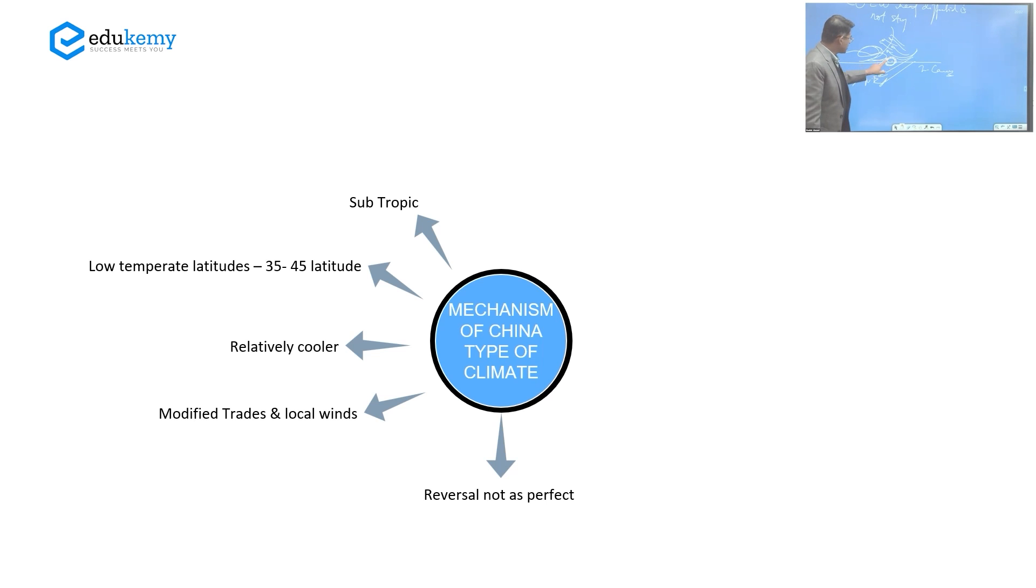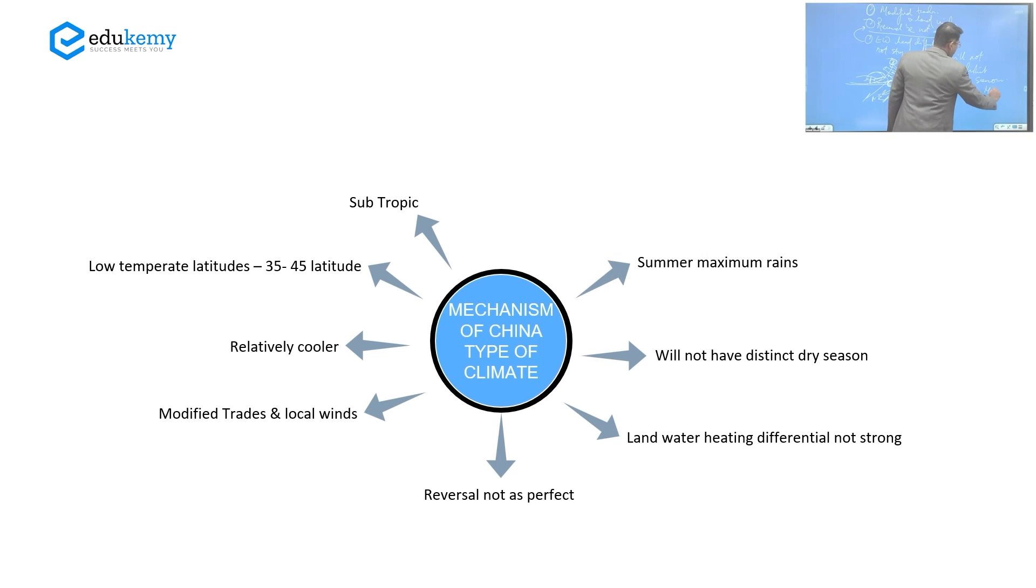In this part these winds can turn like this, but remember this is beyond the Tropic of Cancer. Tropic of Cancer passes through Taiwan. Taiwan is just south of China, so the border areas - Shanghai is somewhere here. So these are northeast trades that get modified towards the Chinese mainland. So these are also like land and sea breeze. Hence the China type of climate also will not have distinct dry season but they have a summer maximum range.